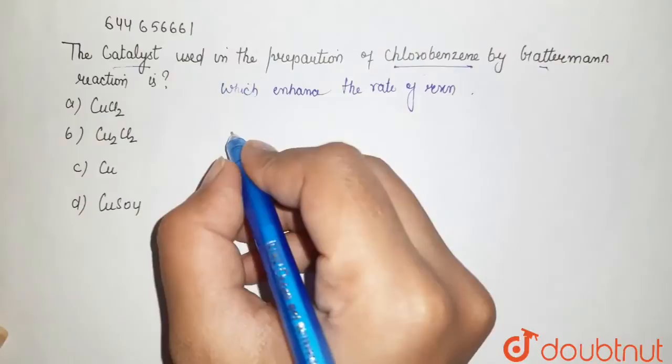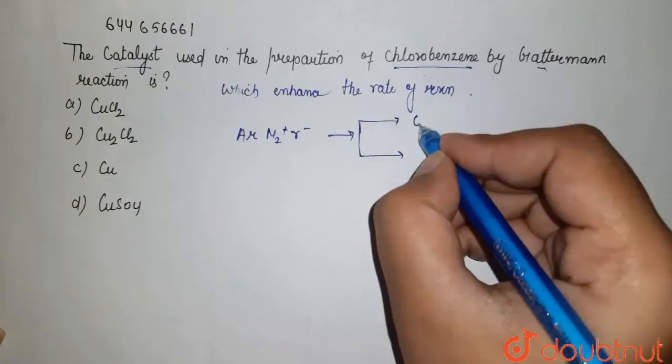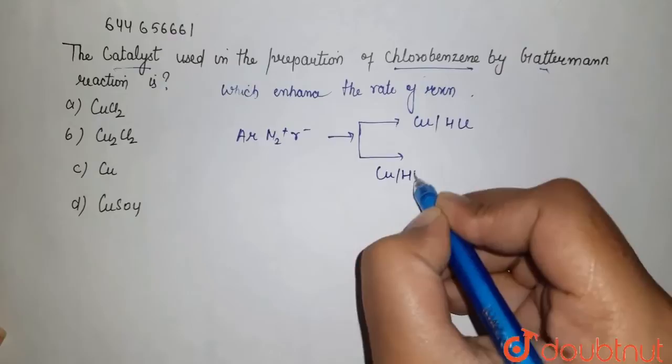It uses diazonium chloride here in the presence of copper in the presence of HCl, and here copper in the presence of HBr. Then what we get the product, that is your chlorobenzene.